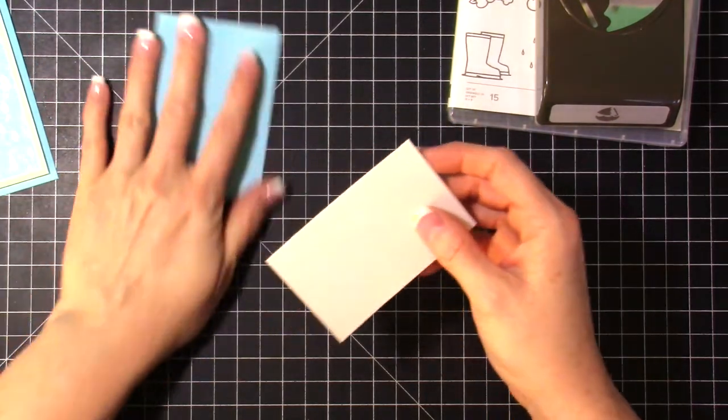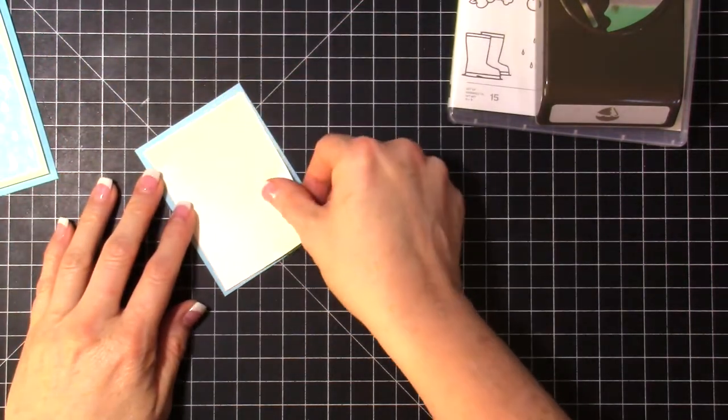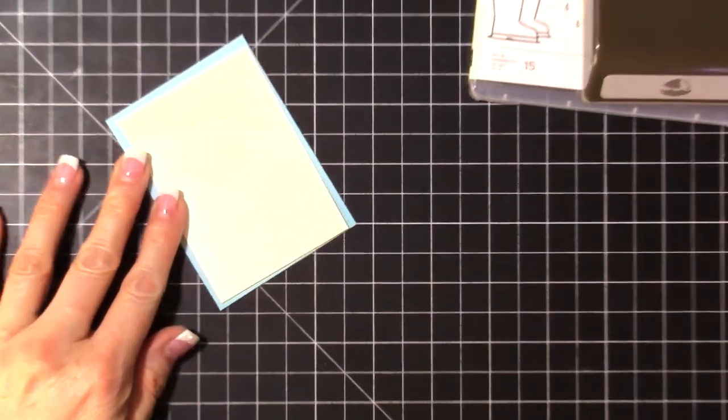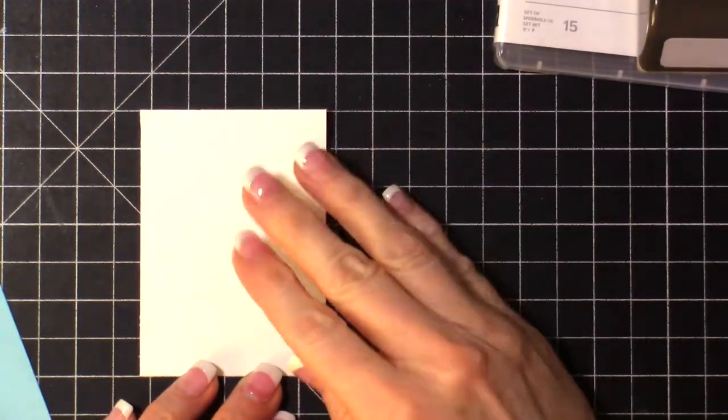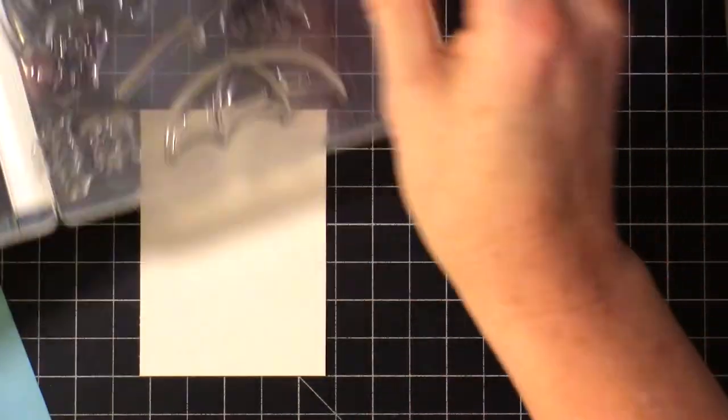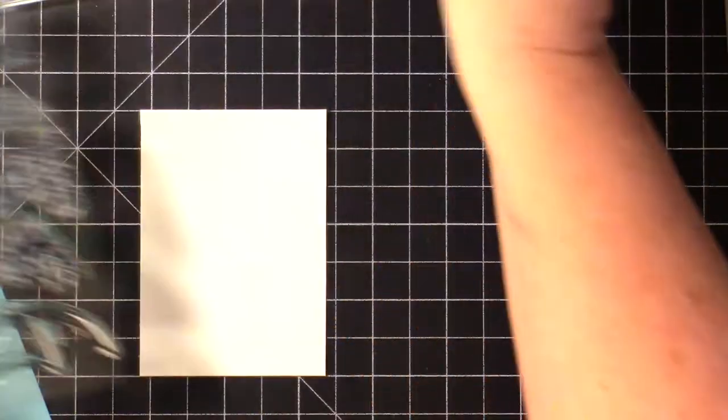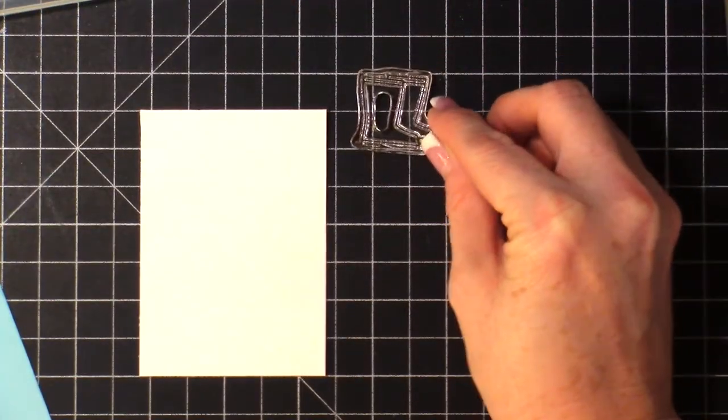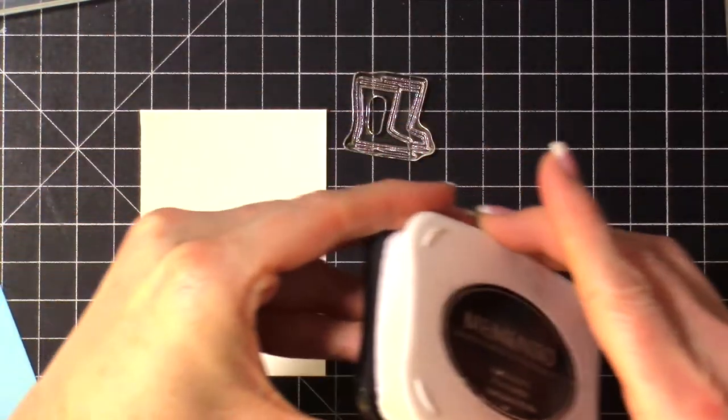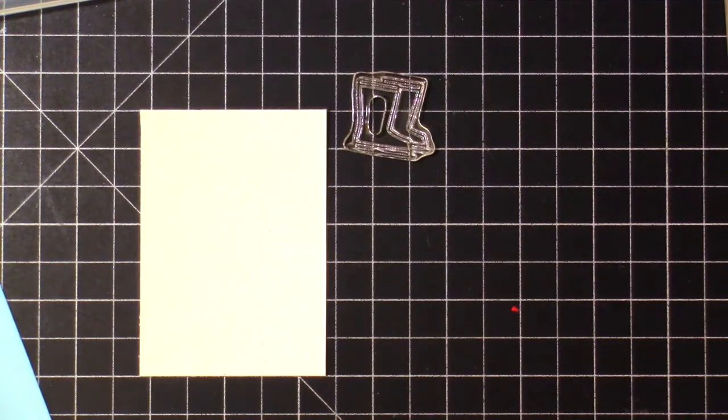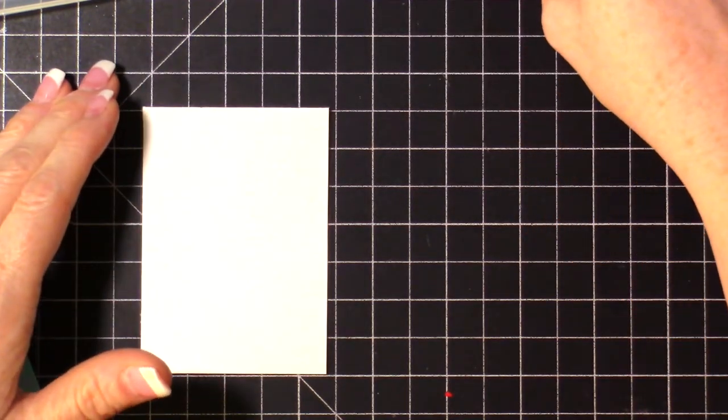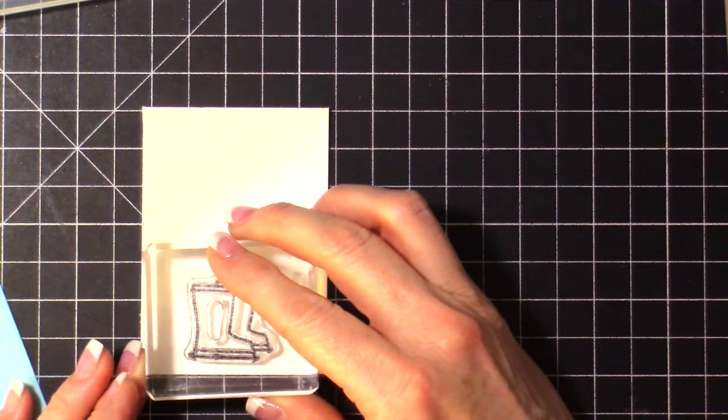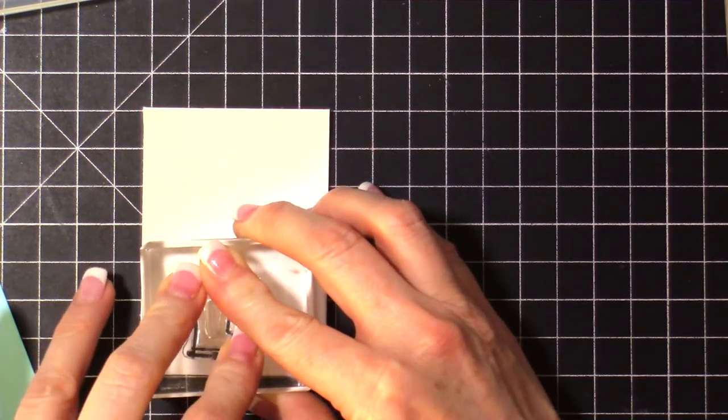I tied that to the very top of the card. Now I'm going to do my stamping and coloring. I have this Whisper White piece that I'm going to do some stamping on, and then I'll also do some stamping and cut some pieces out. The first thing I'm going to stamp are the rain boots. This Under My Umbrella bundle has these cute little rain boots in it.